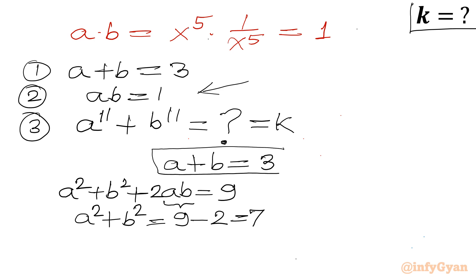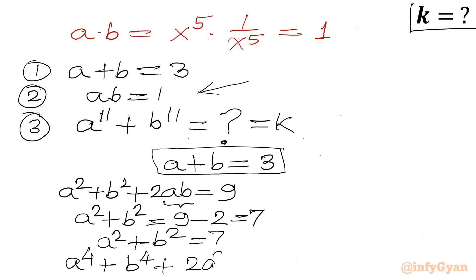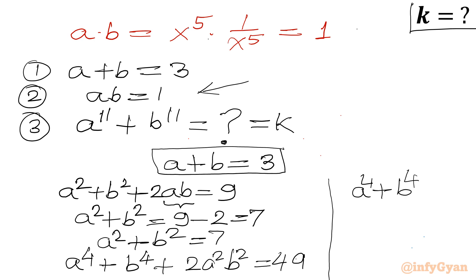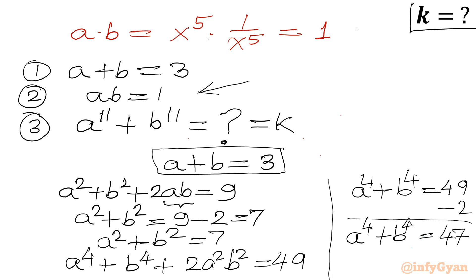Now I will square the equation a square plus b square equal to 7 again. So a power 4 plus b power 4 plus 2 times a square b square equal to 49. Since ab equal to 1, we have a square b square equal to 1, so a power 4 plus b power 4 equals 49 minus 2, which is 47. Now we know a square plus b square equal to 7 and a power 4 plus b power 4 equal to 47.